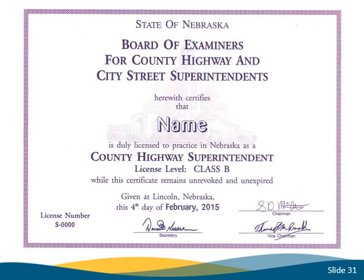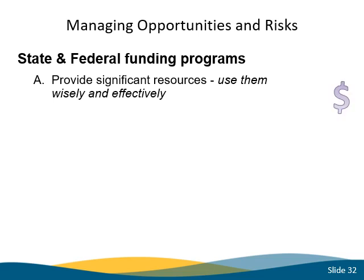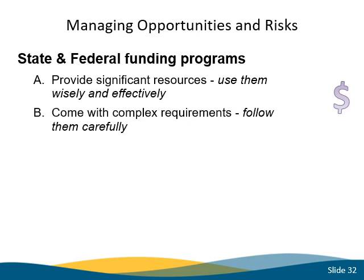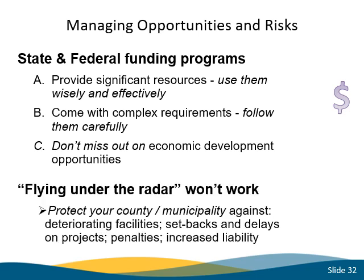The superintendent is key to Nebraska's successful road and street programs. Road and street crews and supporting personnel are critically important, so the superintendent's professional management and leadership is essential for success. There are funding opportunities available — you need to know what they are and how and when to take advantage of them, as they likely come with requirements, some of them complex. Superintendents need to know these requirements or how to find out. Managing risk, avoiding penalties and delays, and minimizing liability are also important aspects of program management.